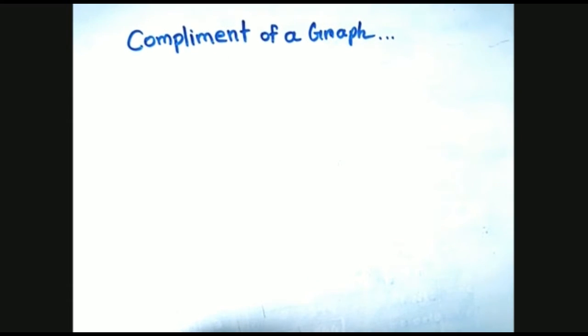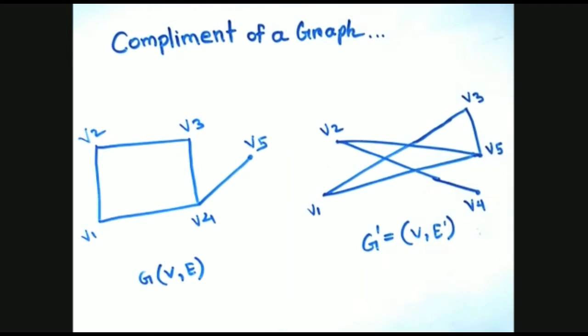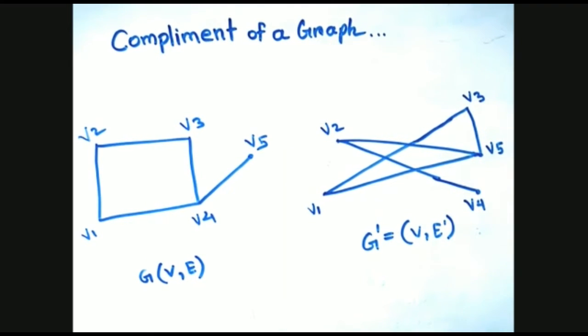What is the complement of a graph? The complement of a simple graph G = (V, E) is the simple graph G' = (V, E'), where the edges of E' are the edges which are not in graph G.